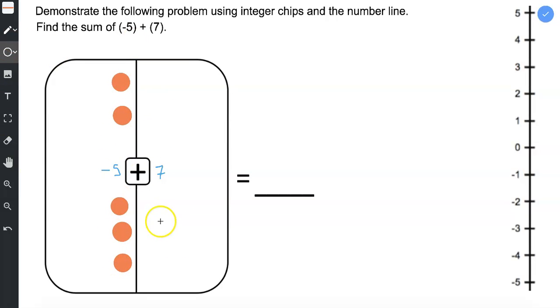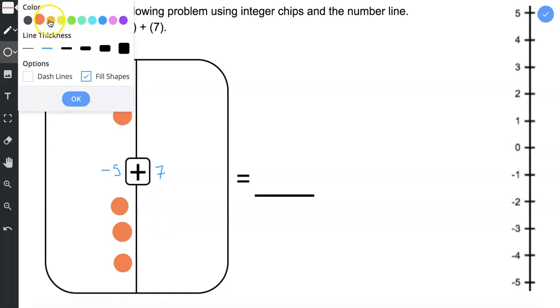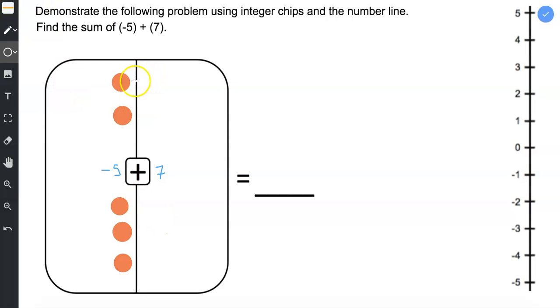And then over here on the right side, I have my seven positive integer chips. And I try to match it up with the red integer chips. So one, two, three, four, five, six, seven.